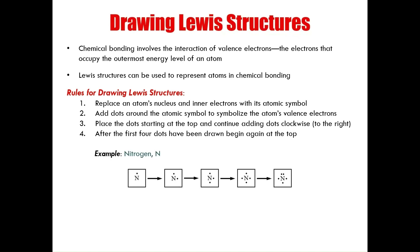The example here is of nitrogen. I drew the atomic symbol of nitrogen and added the first valence electron dot at the top, continuing to add dots around the symbol clockwise until I reached the top again where I doubled up. I stopped at five valence electrons because nitrogen is in group 15, which only has five valence electrons.